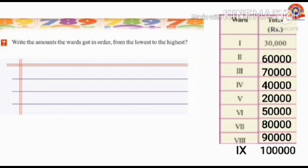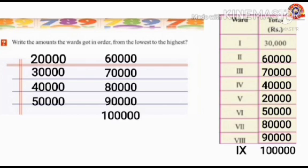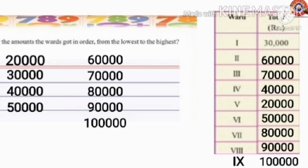Now write the amounts the wards got in order from the lowest to the highest. Which is the lowest amount here? Yes, 20,000. So we can write: 20,000, 30,000, 40,000, 50,000, 60,000, 70,000, 80,000, 90,000 and 1 lakh. I hope you all understood today's class very well. Today's class is over. Thank you.